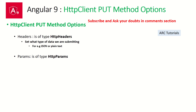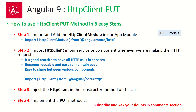HTTP client PUT method accepts HTTP headers and params, just like GET and POST — these are common to all HTTP calls. We'll cover those in upcoming sections, but for now the focus is on making a basic HTTP PUT call. Here are six simple steps to implement the HTTP PUT method. Step 1: import and add the HTTPClientModule in our app module.